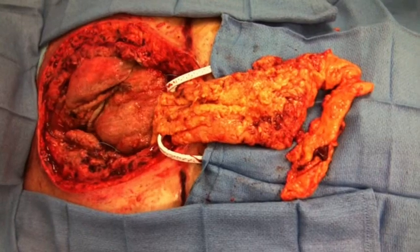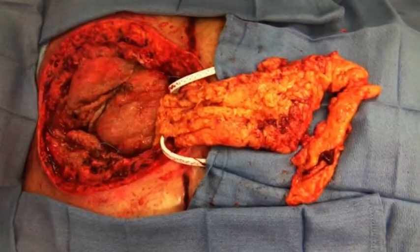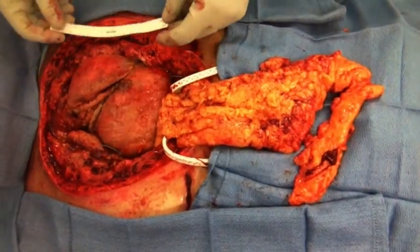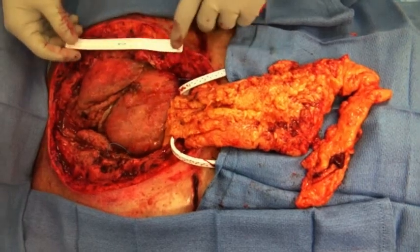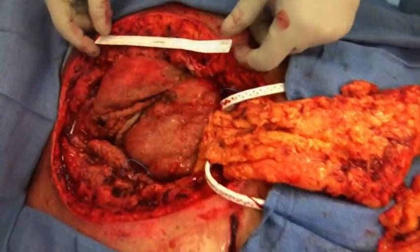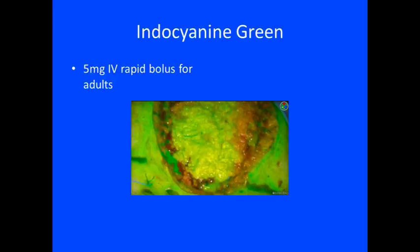Prior to fixation, we can see the sternal defect with the completion of the omental flap in view. A 5mg bolus of indocyanine green was then given to visualize good flap vascularity.